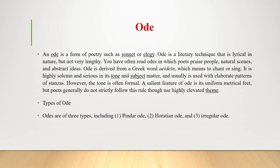The irregular ode has been the most common form in English ever since. Wordsworth's 'Ode: Intimations of Immortality,' written in 1807, is representative. Pindar's odes were encomastic — that is, written to praise and glorify someone, celebrating a victorious athlete at the Olympic Games. Many later English odes were also written to eulogize a person, such as John Dryden's 'Anne Killigrew,' or the arts of music or poetry, as in Dryden's 'Alexander's Feast,' or a time of day, as in Collins's 'Ode to Evening,' or abstract concepts like Thomas Gray's 'Hymn to Adversity' and Wordsworth's 'Ode to Duty.'